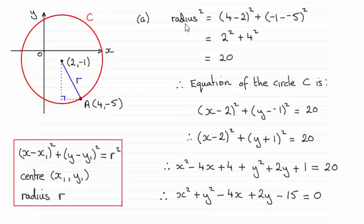So by using Pythagoras' theorem, the radius squared is equal to the difference between the x coordinates all squared. So I've done 4 minus 2, as you can see, which gives us 2, and then that will be squared.